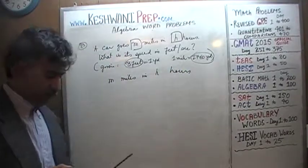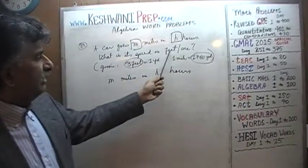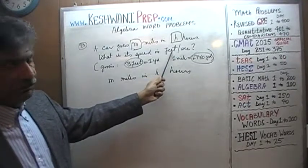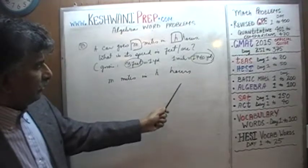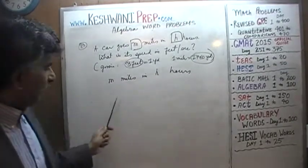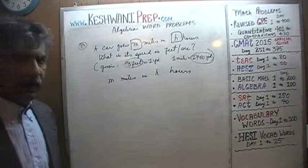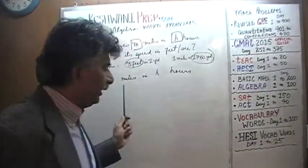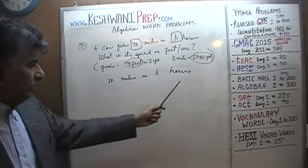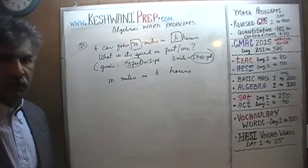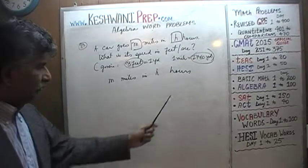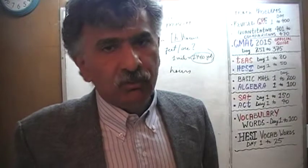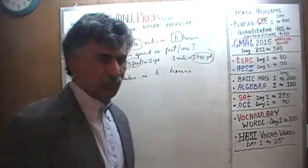We are looking for speed in feet per second. We need to have the unit of distance on this side because it will be easier to do the work here. Unlike solving an equation where we prefer to have our unknown on the left-hand side, when doing a word problem it is better to have the unknown quantity on the right-hand side because that way you have more room to do the work. It is just a matter of convenience.